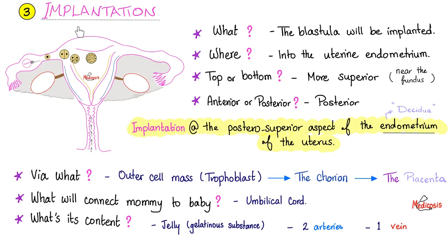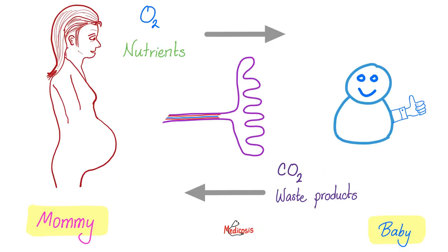Implantation happens at the more superior or posterior-superior aspect of the uterine cavity. This is where the placenta will be — more superior than inferior. The placenta should be up here. Where did the placenta come from? From the chorion, which came from the trophoblast, which is the outer cell mass.